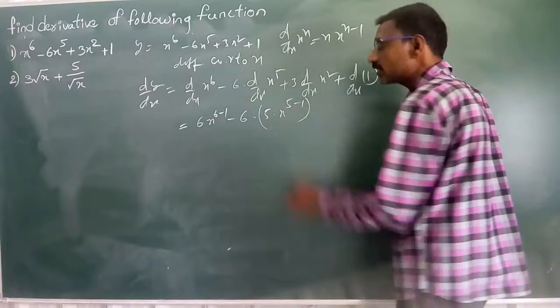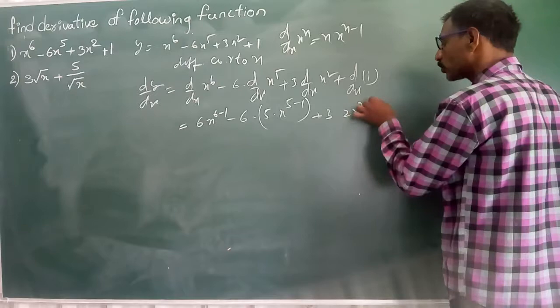This is constant. It is multiplied by this one. Plus 3 into 2 into x to the power of 2 minus 1. The constant derivative is 0.